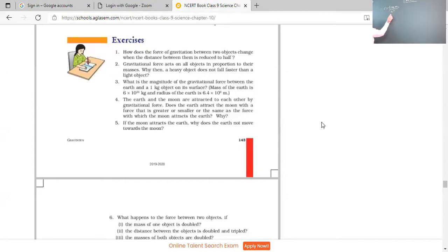When distance is reduced to half. How does the force of gravitation between two objects change when distance between them is reduced to half? What is the formula? G M1 M2 over R squared. So, if R is halved, in place of R we put R by 2. R by 2 square is R square by 4.